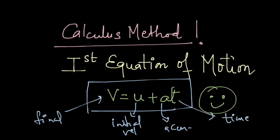Let us see how we can derive this equation using calculus. We are going to start with the definition of acceleration, and that is a equals to dv by dt. And we can write this as dv equals to a into dt.